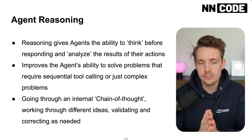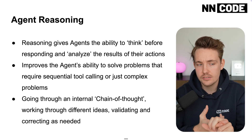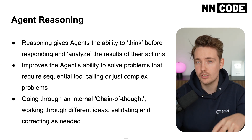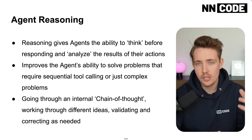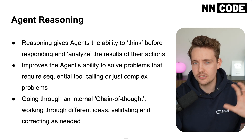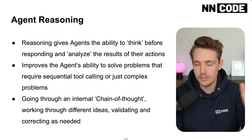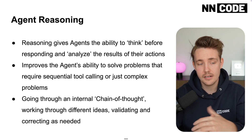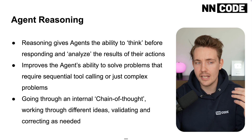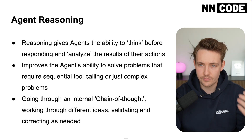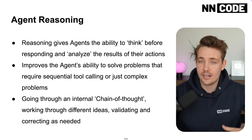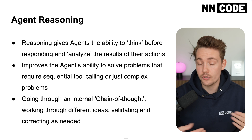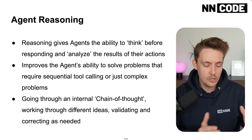A reasoning agent basically gives agents the ability to think before they respond. Usually with large language models, they take the input and generate a response based on that. But you can put the agents in thinking mode, so it performs a reasoning step — chain of thought — just as a human would do.